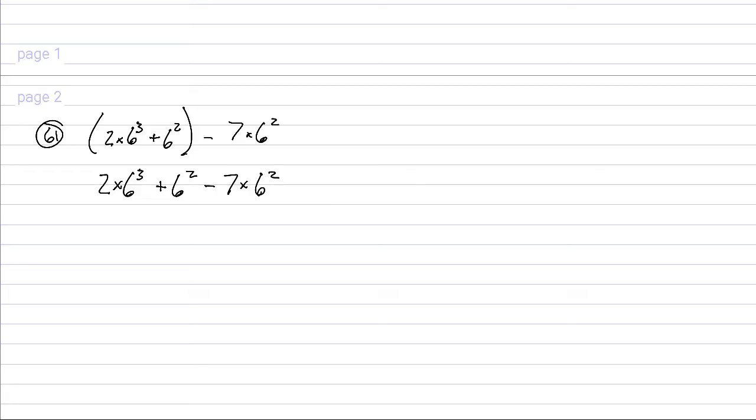And with the statement 6 minus 7 times 6 squared, we can factor that 6 squared out. That's equal to 6 squared times 1 minus 7.